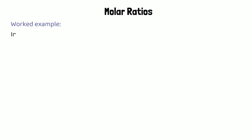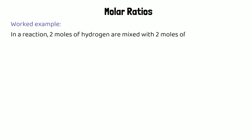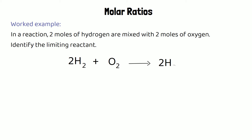To work out limiting reactants, you need to know about molar ratios. In a reaction where two moles of hydrogen are mixed with two moles of oxygen, you need the symbol equation: 2H₂ + O₂ → 2H₂O. We can see we have a two-to-one molar ratio, meaning we always use twice as much hydrogen as oxygen.